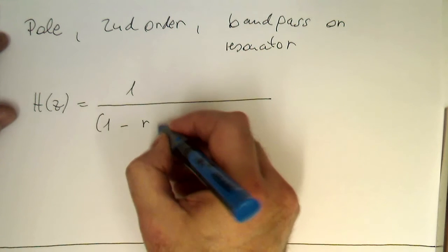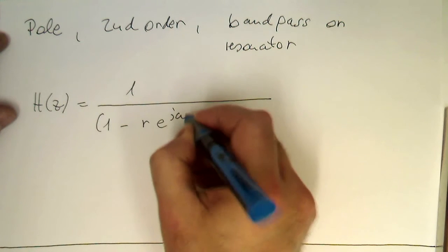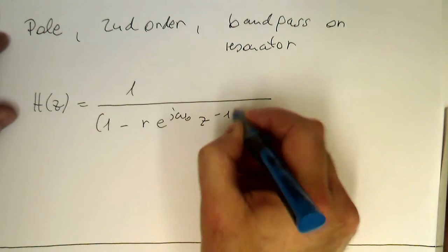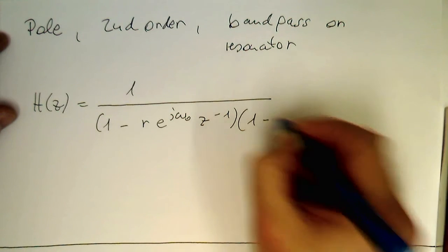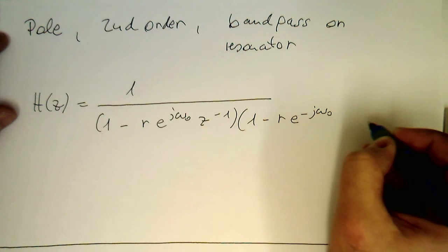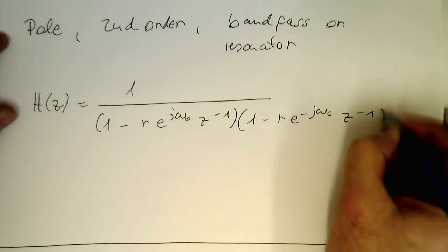So 1 minus, and then e to j omega zero, z to minus 1, and then we multiply this here, 1 minus R, e to minus j omega zero, z to minus 1.